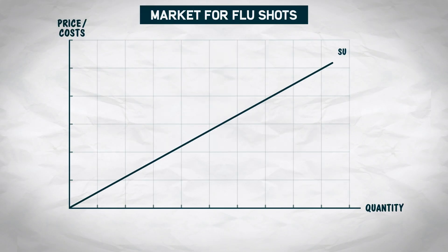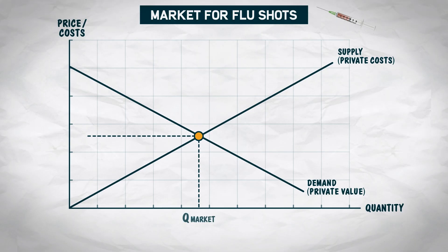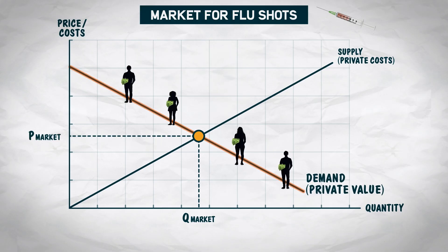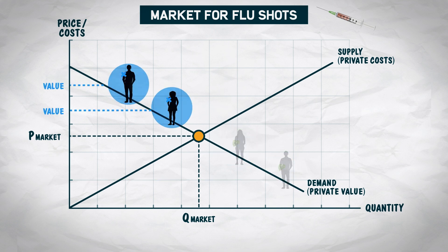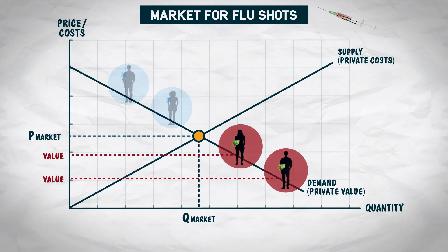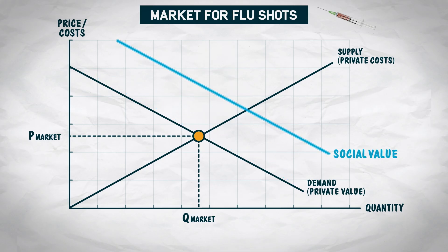Here's a supply and demand graph with the quantity of flu shots on the horizontal axis. On the vertical axis, we're showing both prices and costs so that we can illustrate both the price paid for a flu shot and the social value to bystanders. Here's the market equilibrium. The demand curve represents how individuals value a flu shot. When they decide to get a flu shot, individuals compare their personal benefits to their costs. Many people do not sufficiently consider the external benefits of a flu shot to all relevant bystanders — that is, not all of us are total altruists. When we add the external benefits to the private benefits, we get the social value curve here.